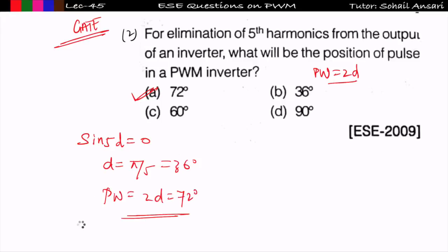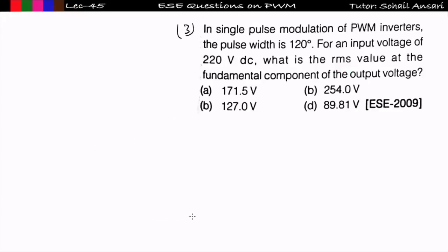Watch the previous lecture to understand the single PWM technique. Using the Fourier series of single PWM and setting sin(5d) = 0, you get the pulse width equal to 72 degrees. So option A is correct.